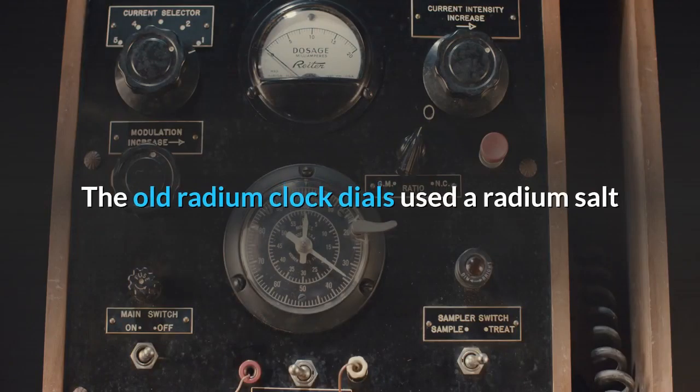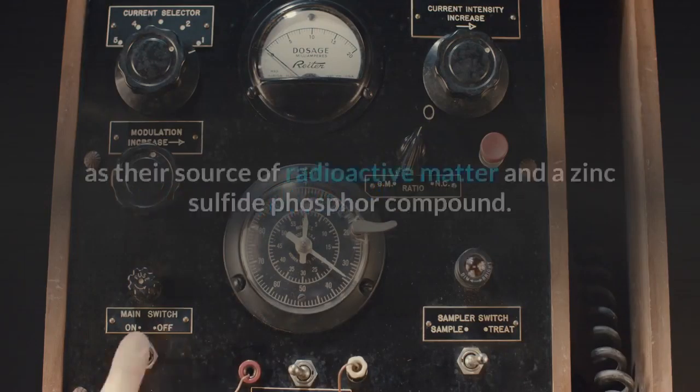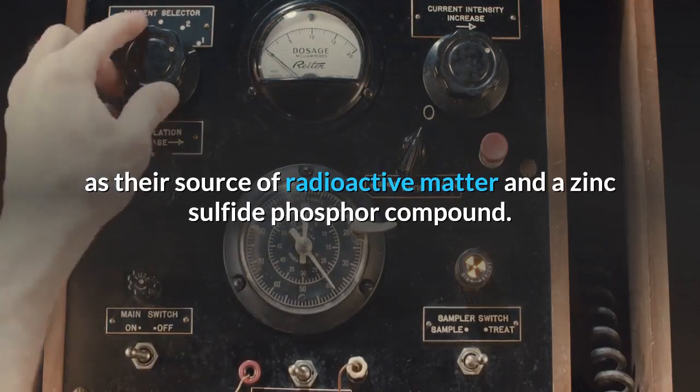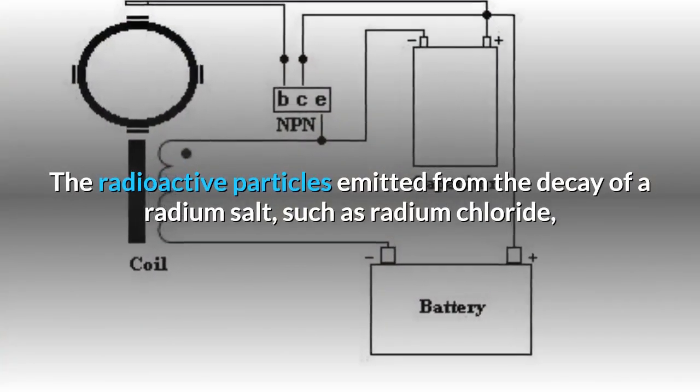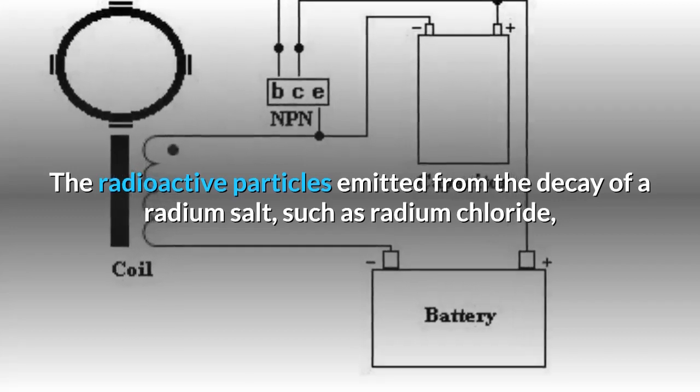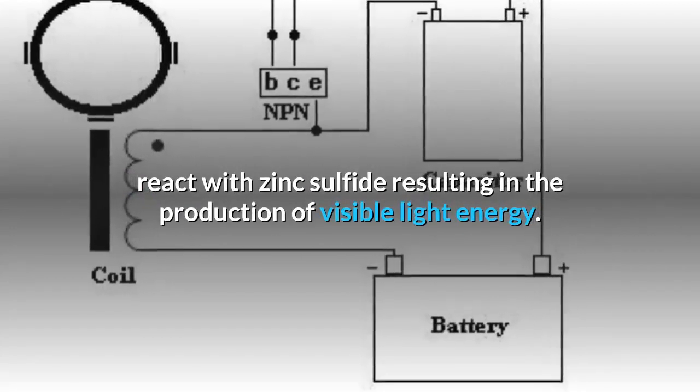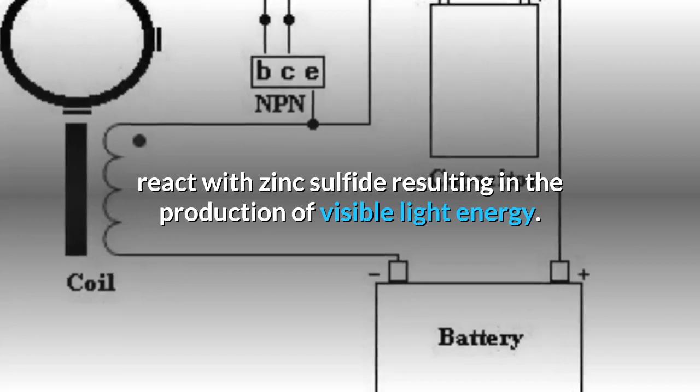The old radium clock dials used a radium salt as their source of radioactive matter and a zinc sulfide phosphor compound. The radioactive particles emitted from the decay of a radium salt, such as radium chloride, react with zinc sulfide resulting in the production of visible light energy.